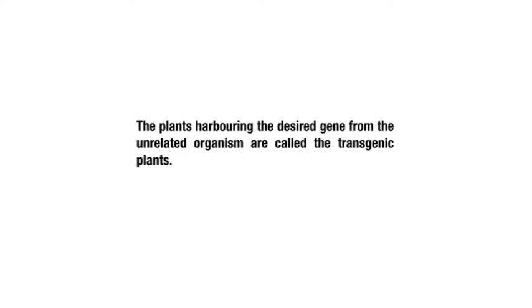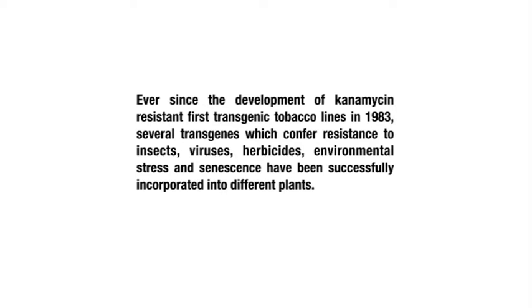The plants harboring the desired gene from an unrelated organism are called transgenic plants. Ever since the development of kanamycin-resistant first transgenic tobacco lines in 1983, several transgenes which confer resistance to insects, viruses, herbicides, environmental stresses, and cyanobacteria have been successfully incorporated into different plants. There are several reports on improvement of nutritional content of plants, modifying plant products, lignin and starch content, and also on employing plants as bioreactors for production of therapeutic agents, antibody fragments, and vaccines.